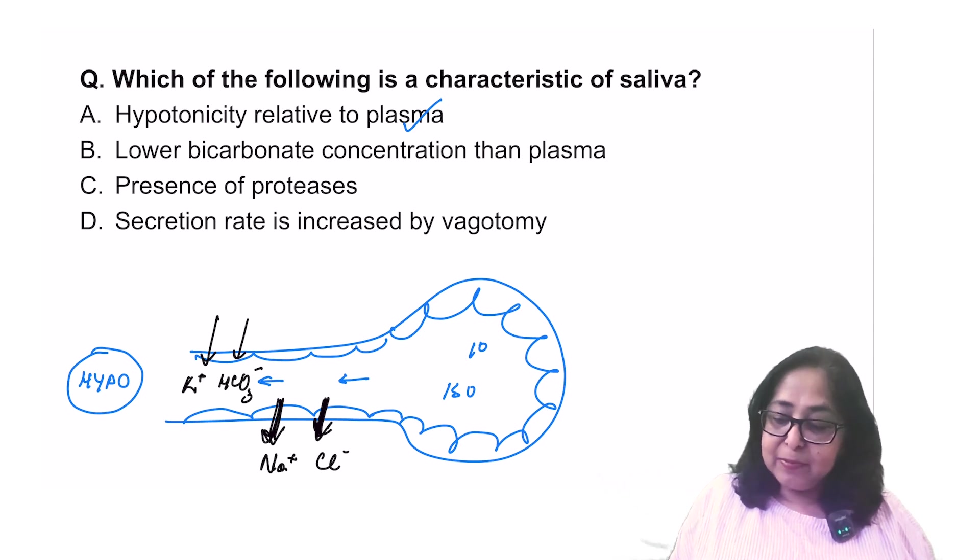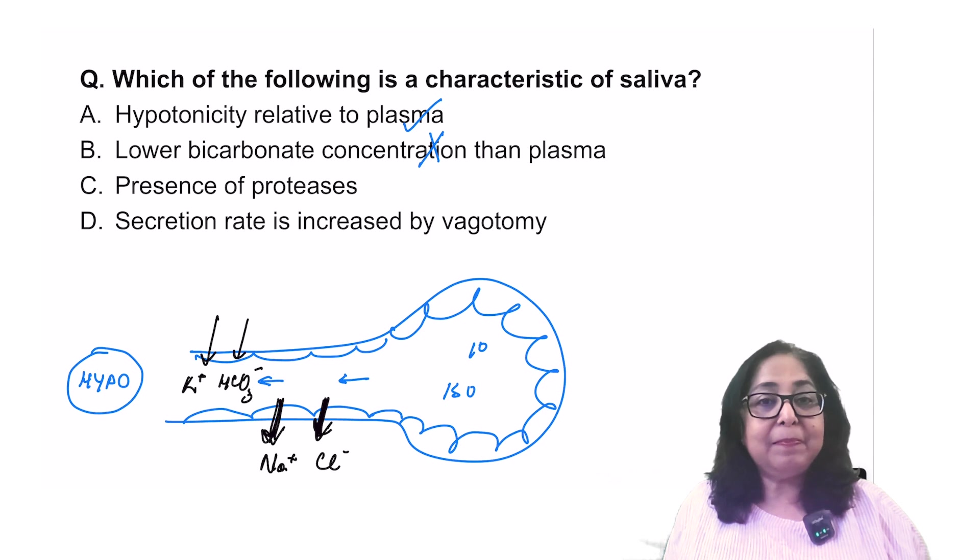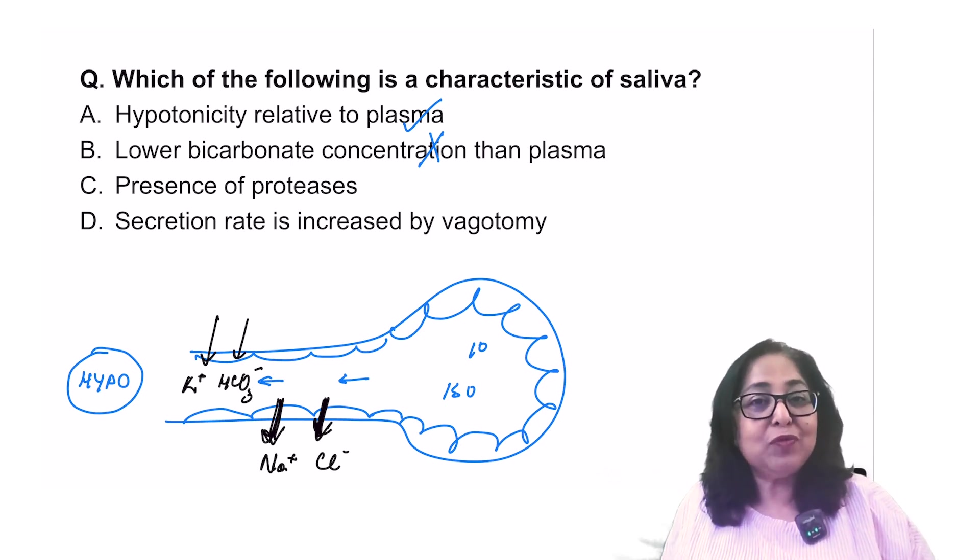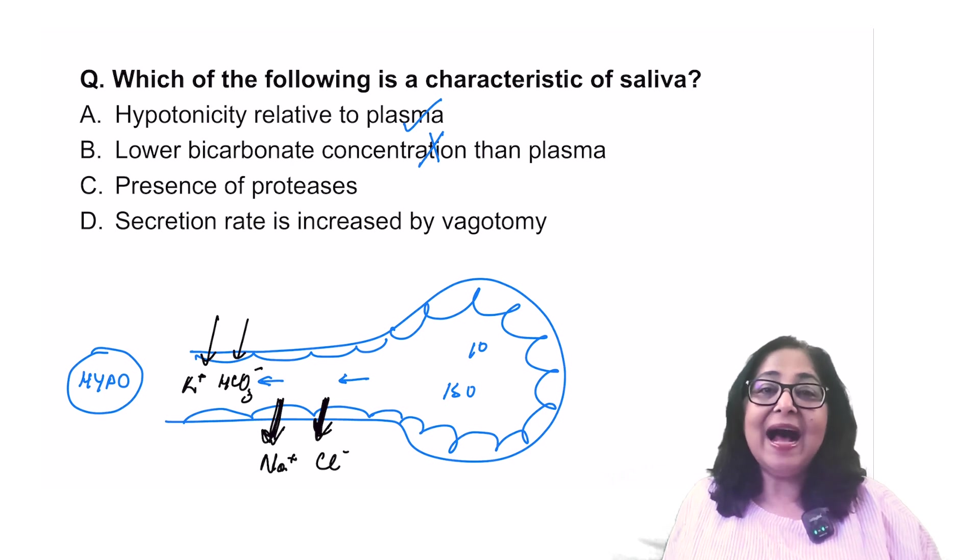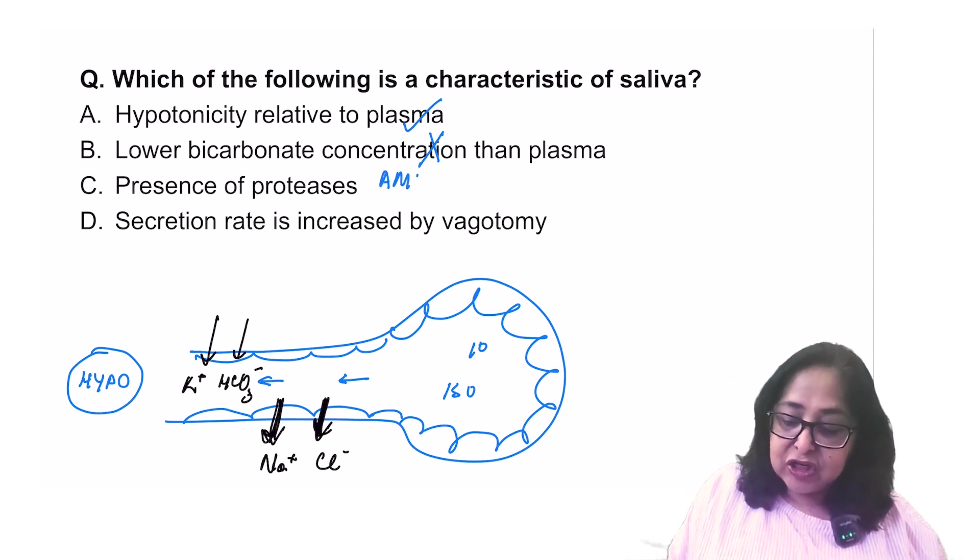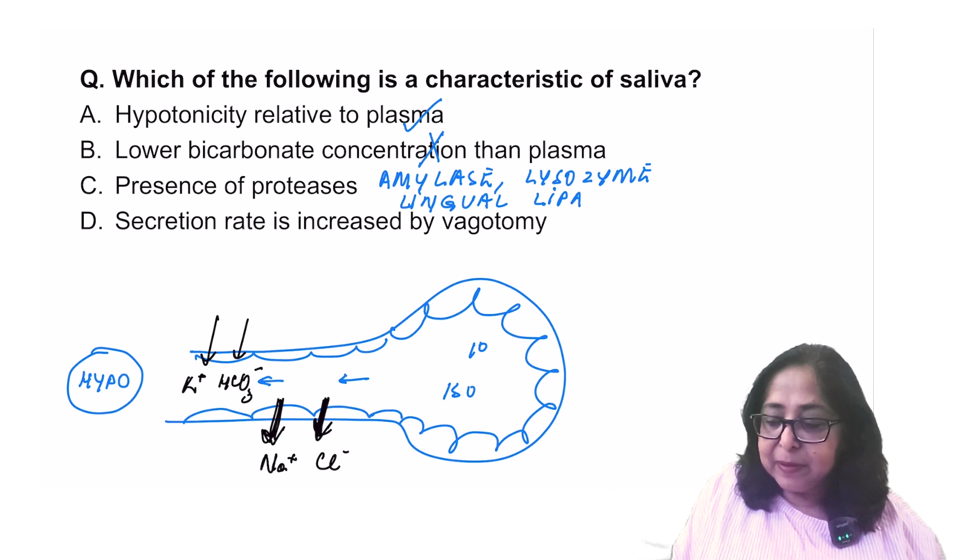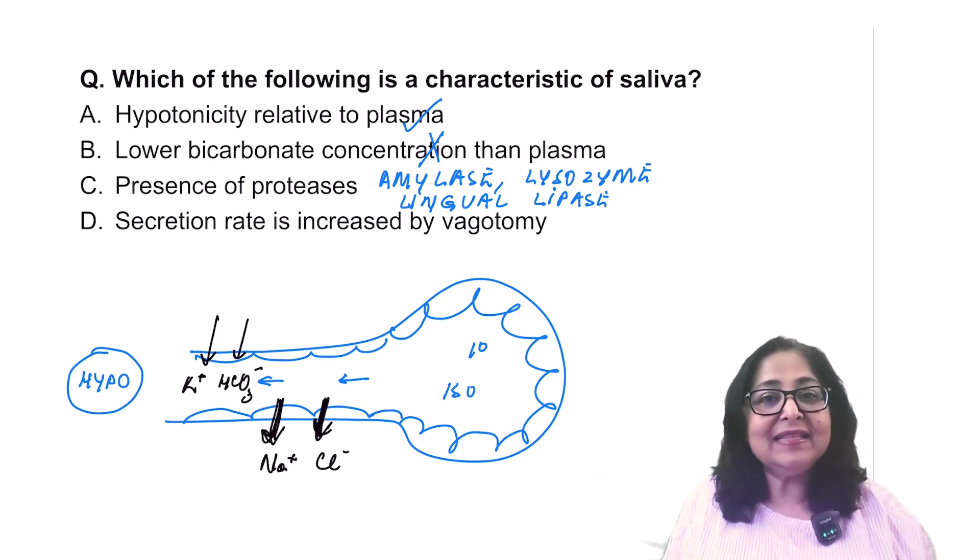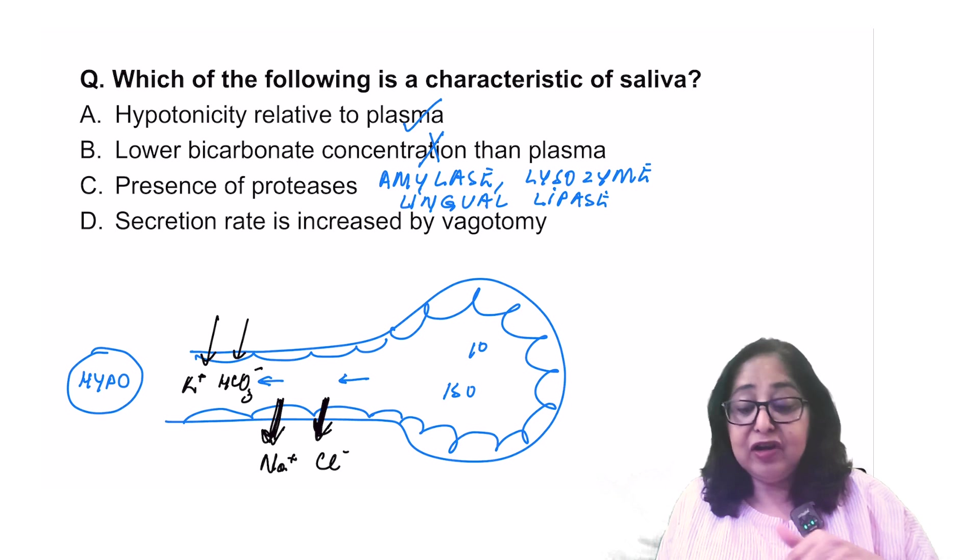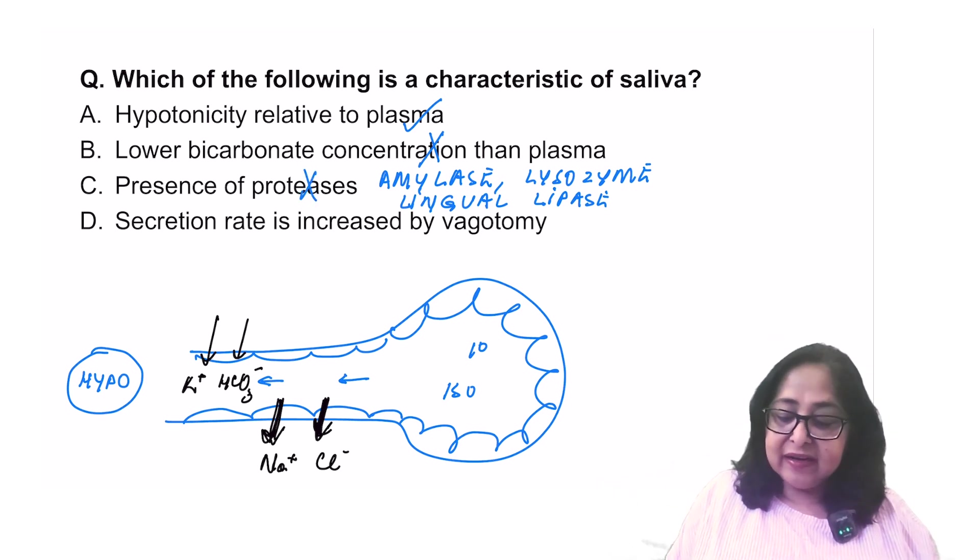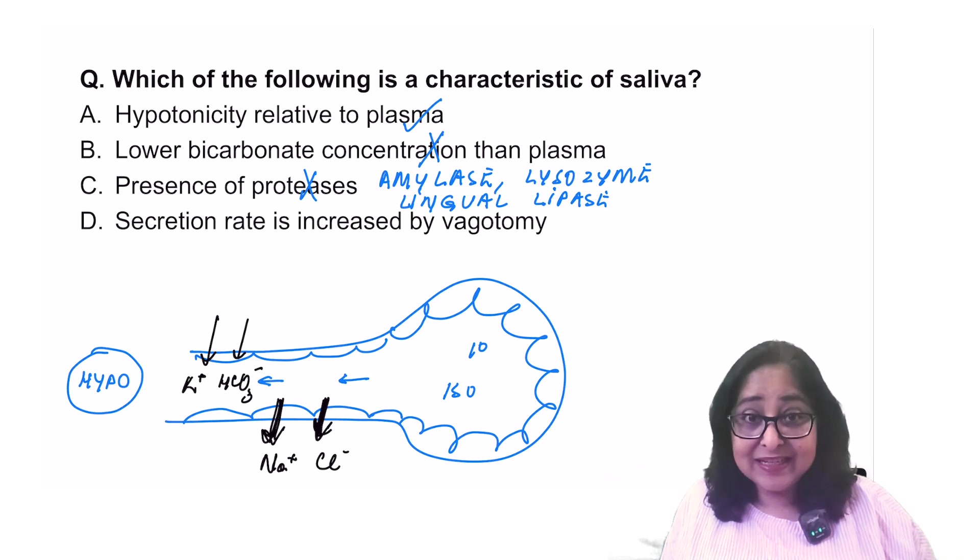Does it have a lower bicarbonate concentration than plasma? No. It will, in fact, have a higher bicarbonate concentration because there is a secretion of bicarbonate. Are there any presence of proteases? No. Saliva has amylase, which is for the digestion of carbohydrates. It has a lysozyme and it has a lingual lipase. Lingual lipase is secreted by the ebunus glands on the dorsum of the tongue. There are no proteases. So this is incorrect.